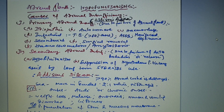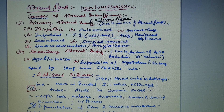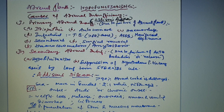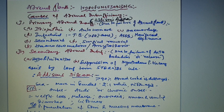We will discuss hypofunctioning of the adrenal glands, otherwise called adrenocortical insufficiency. Depending on the site of lesion, it is divided into two types: primary adrenocortical insufficiency and secondary adrenocortical insufficiency. In primary adrenocortical insufficiency, there is a failure of the adrenal gland itself — a problem with the adrenal gland.